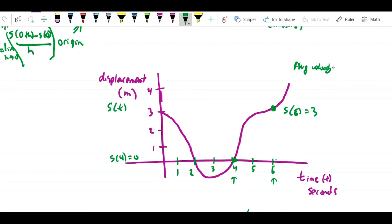So the average velocity equals s(6) minus s(4) over 6 minus 4. That's going to be 3 minus 0 over 2, which is 3 halves. That's the average velocity.